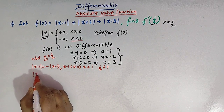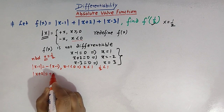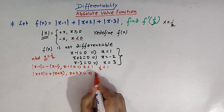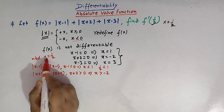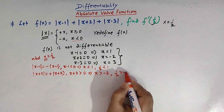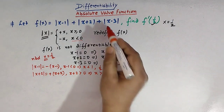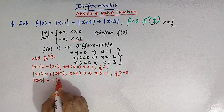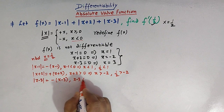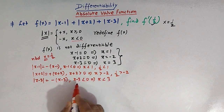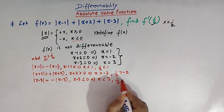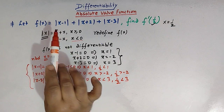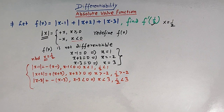For the second term, mod of x plus two takes the value positive x plus two whenever x plus two is greater than zero, meaning x must be greater than minus two. Since x equals half, and half is obviously greater than minus two, this applies. For mod of x minus three, it equals negative of x minus three since half is obviously less than three.